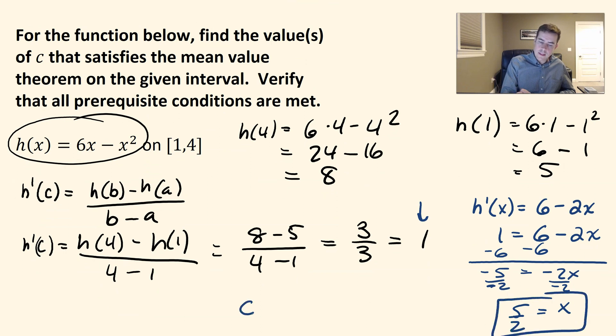So that is our c value. c would be 5/2 or 2.5. We're going to get the slope equal to 1, and that is between this interval from 1 to 4. And there you go, that's it.